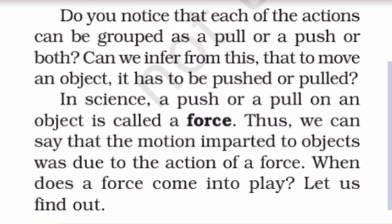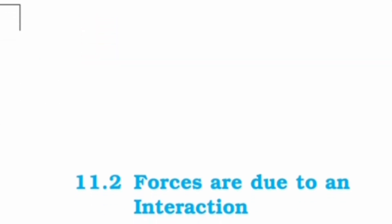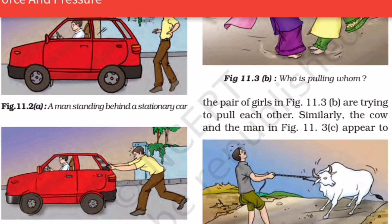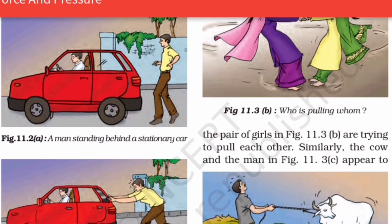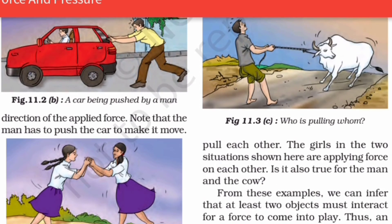When does a force come into play? Forces arise due to interaction — when two objects are in contact. Suppose a man is standing behind a stationary car; the car will not move due to his presence alone. But when he applies force, the car begins to move. When he pushes the car, it begins to move in the direction of the applied force.